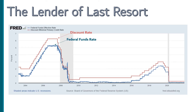In order to ensure that they are indeed the last resort for a bank in trouble, the Fed typically sets the discount rate above the federal funds rate. Once again, the federal funds rate is the interest rate banks charge each other for short-term loans.